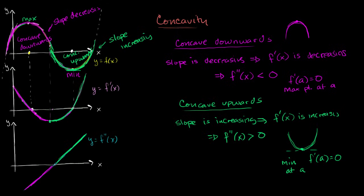If you were paying close attention in the last video, an interesting question might have popped up in your brain. We have talked about the intervals over which the function is concave downwards, and then we talked about the interval over which the function is concave upwards. But we see here that there's a point at which we transition from being concave downwards to concave upwards.